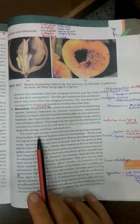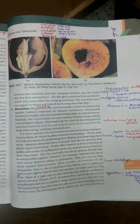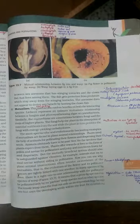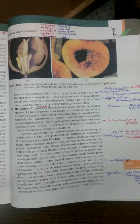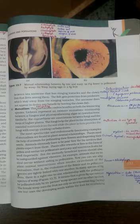In the same manner, the most spectacular and evolutionary fascinating examples of mutualism are found in plant and animal relationships. Plants need the help of animals for pollinating their flowers and dispersing their seeds.